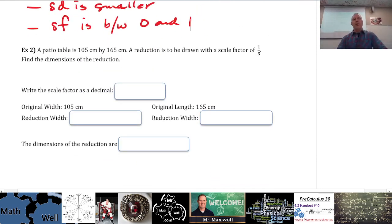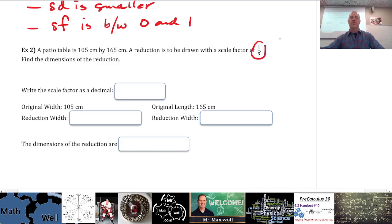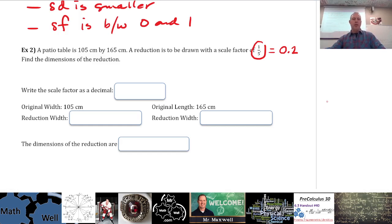Example 2: a patio table has dimensions of 105 centimeters by 165 centimeters. A reduction is to be drawn with a scale factor of one-fifth. You can change that fraction into a decimal — one-fifth is the same as 0.2. Find the dimensions of the reduction.